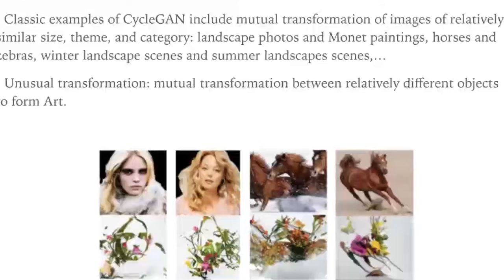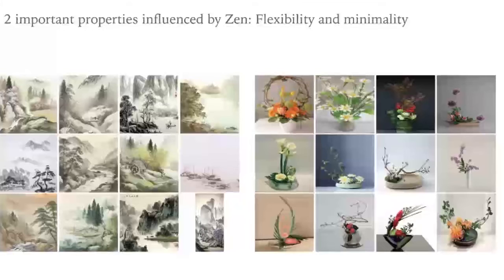Although the idea of unusual transformation is very simple, it contains several difficult problems, because the transformation between two very different things is naturally difficult. It requires improvements to the original CycleGAN. In our experiment we choose to perform unusual transformation using ikebana and sansui as the target art styles.